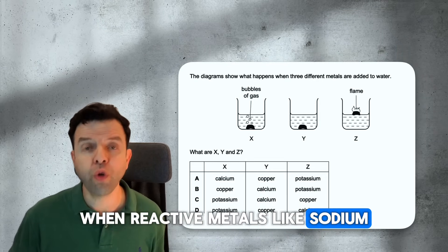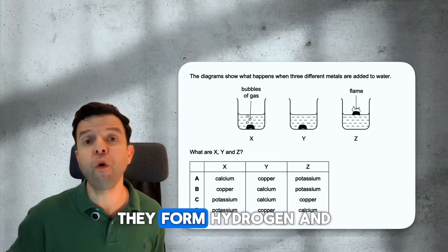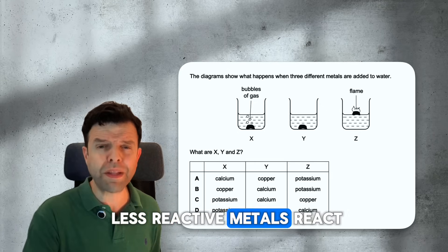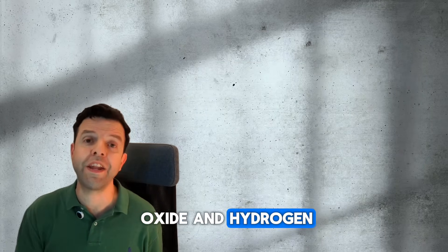When reactive metals like sodium, potassium, or calcium react with water, they form hydrogen and metal hydroxide. On the other hand, less reactive metals react with steam and produce both metal oxide and hydrogen.